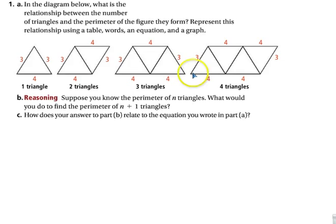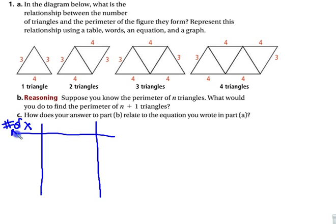In the diagram below, what is the relationship between the number of triangles and the perimeter of the figure they form? The number of triangles and the perimeter. So we are going to represent it as a table. So the first thing we do is we make our table. X is going to represent the number of triangles. Y will represent the perimeter.